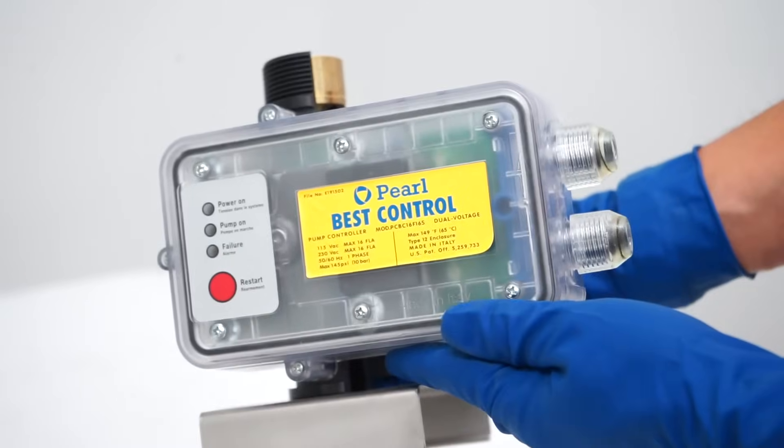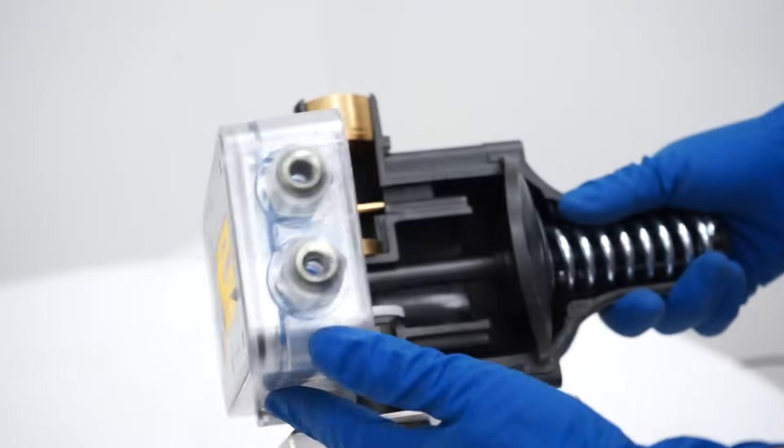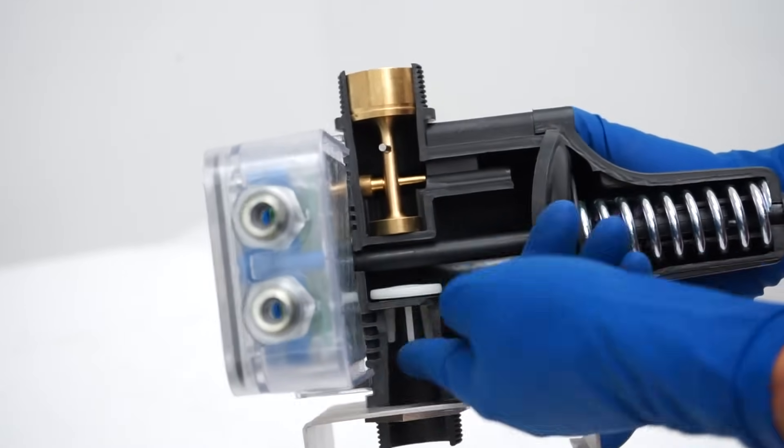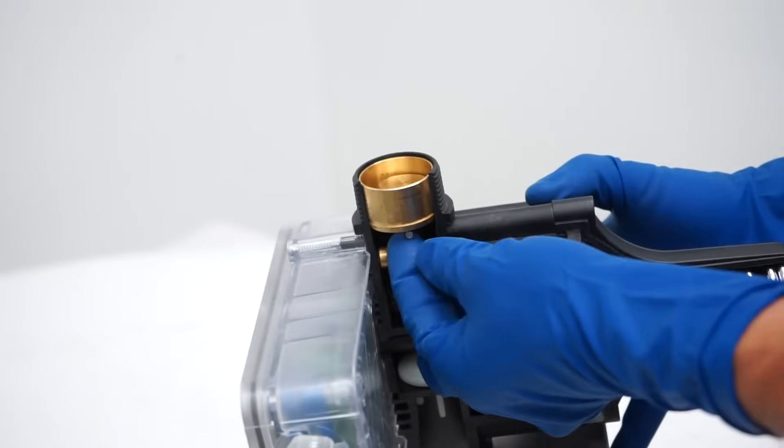For better understanding, this is how the controller operates. You can see a check valve at the bottom and one at the top. The one at the top is the one that controls the operation. Both valves should be able to move freely.